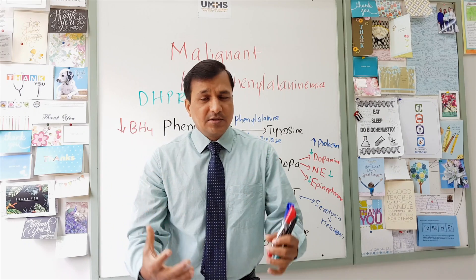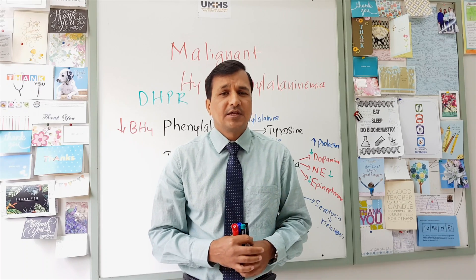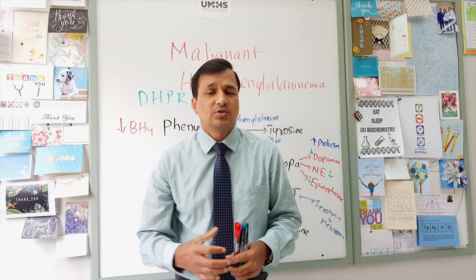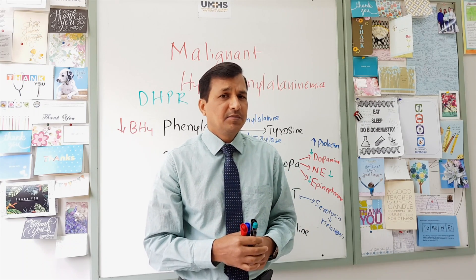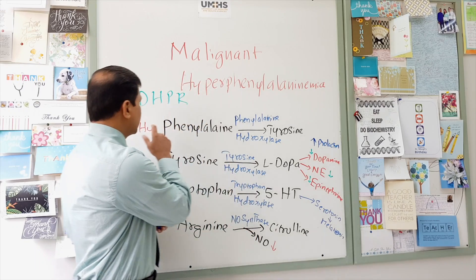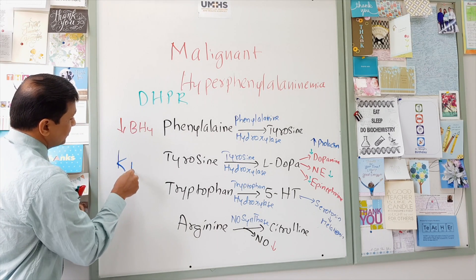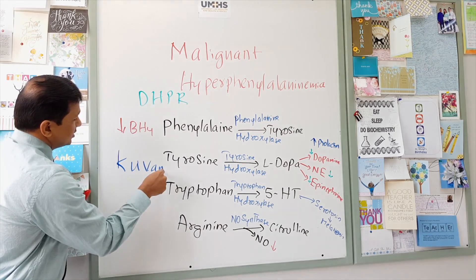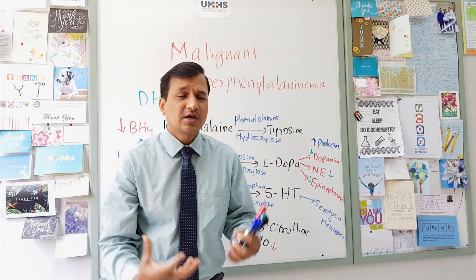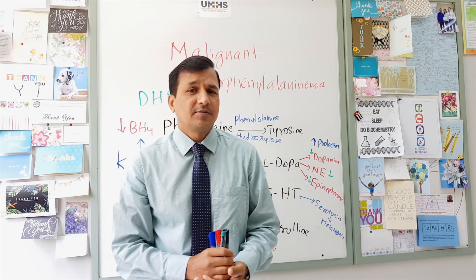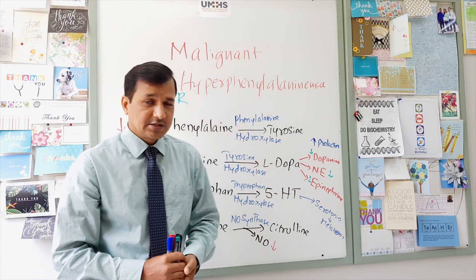This condition is referred to as malignant hyperphenylalaninemia, and most of these patients die within 2 years of diagnosis. One treatment option is supplementation with tetrahydrobiopterin. There is an FDA-approved drug called Kuvan (Q1), which is essentially a tetrahydrobiopterin supplement. Supplementation with this drug helps restore activity of the affected enzymes to some extent.